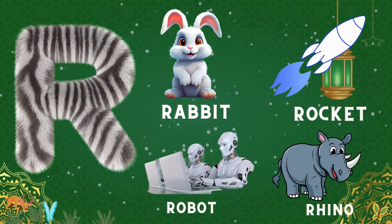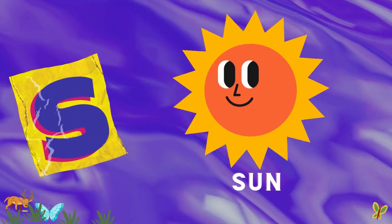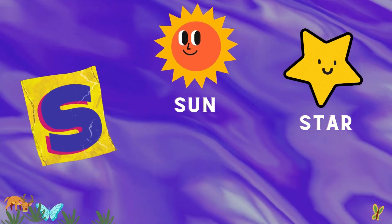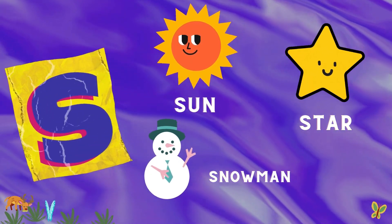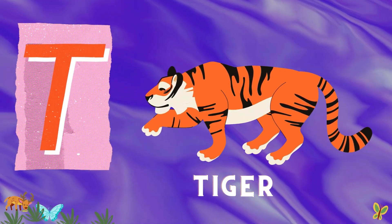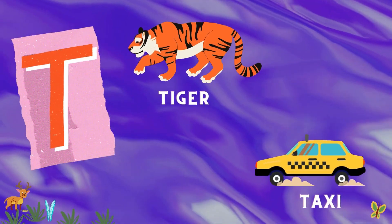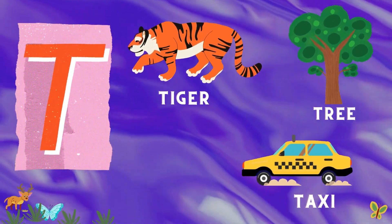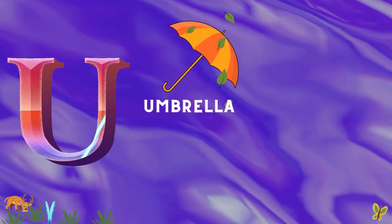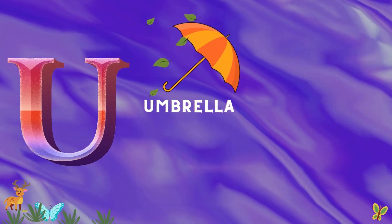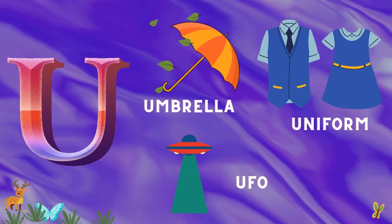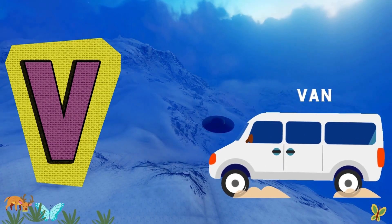R for rhino. S for sun, star, and snowman. T for tiger, taxi, tree, and turtle. U for umbrella and uniform.